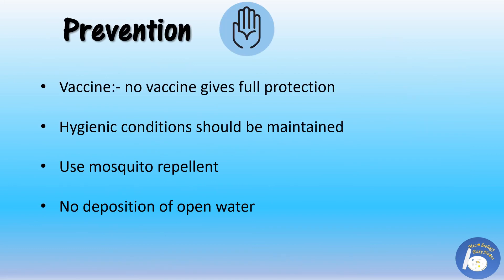Prevention is always better than cure. The best ways to prevent dengue are: never allow water to settle in open containers, use mosquito repellent whenever and wherever required, and spray anti-mosquito spray in open areas like gardens. Though a few anti-dengue vaccines are available, they don't provide enough protection against dengue. Hygienic conditions should be maintained.